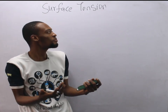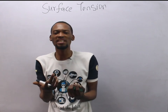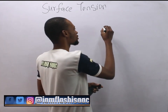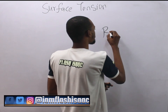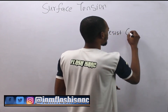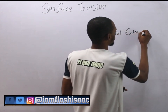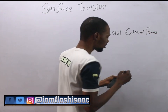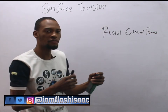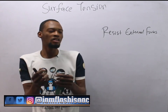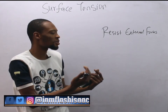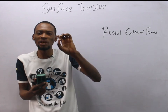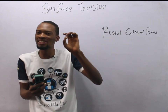Surface tension is simply the property of a liquid that allows it to resist a standard force. It is as a result of cohesive force. Cohesive force, or cohesion, is the force of attraction between molecules of the same substance.